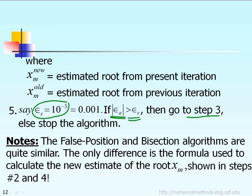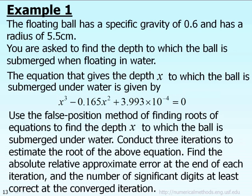So the false position method, in summary, is very similar to the bisection algorithm. The only thing different is we have a different formula to calculate the newly predicted root x sub m. That's all. In order for you to understand better, let us give an example, and this example has some engineering physical story behind it.